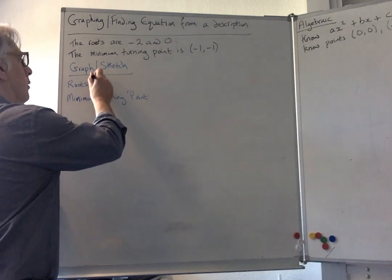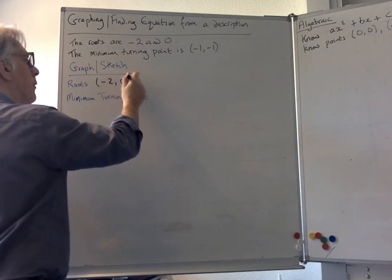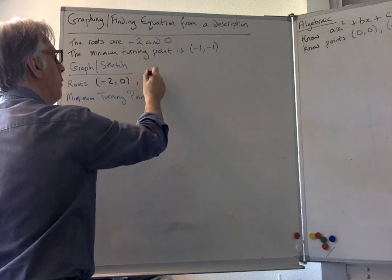Well, we know what the roots are. So minus two, it's going to be (-2, 0), and the other one is zero, so that's going to be (0, 0).